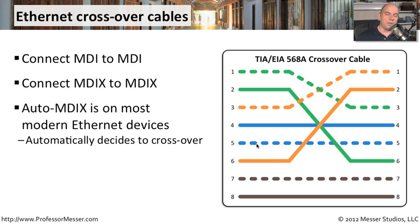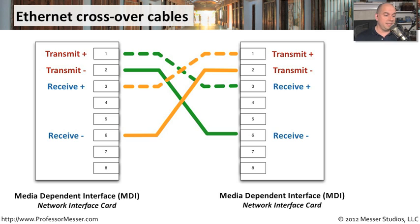Modern network devices don't necessarily require a crossover cable. They're smart enough to detect that if you're plugging two laptops together, the network interface card automatically determines they are both MDI devices and performs the crossover internally — this is called auto MDI-X. But if you're using older interface cards or cards where auto MDI-X isn't working correctly, you can always use a crossover cable to force that connection. With the crossover in place, transmit goes to receive and receive goes to transmit, allowing the two devices to communicate.